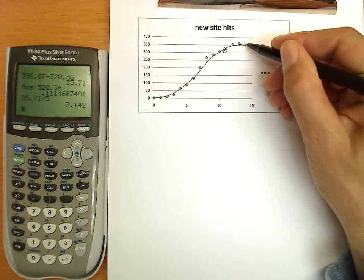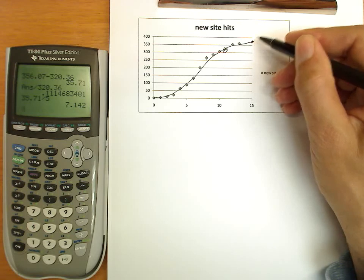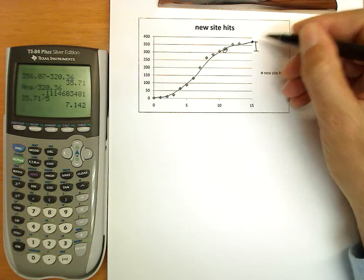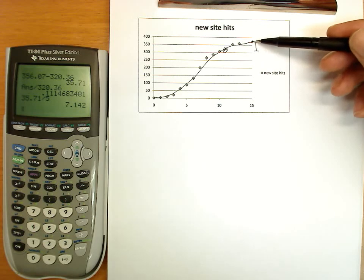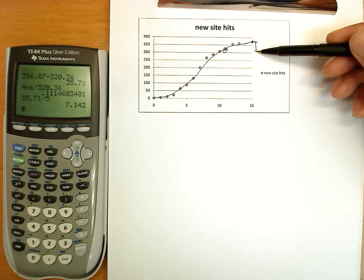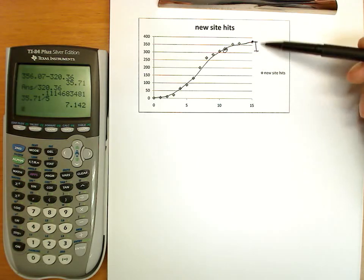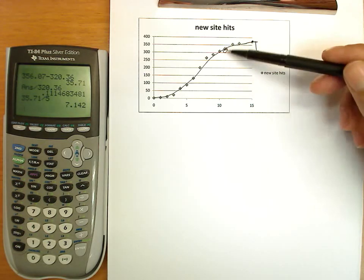At day 10, we were here. And day 15, outside of our data, we were here. The total change is the difference between these two numbers. The y value here, the f of x value there, and here. So how much did it go up?